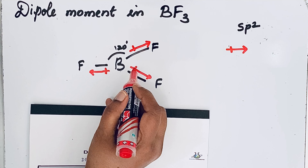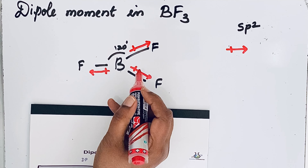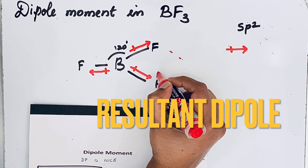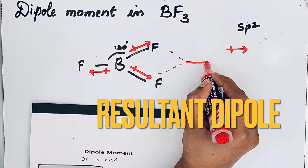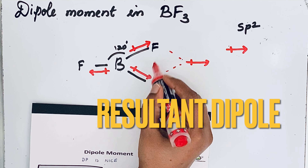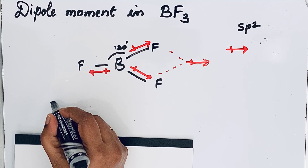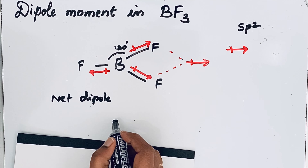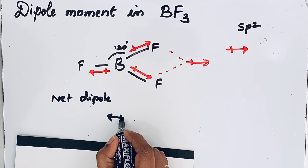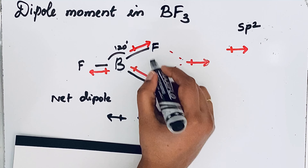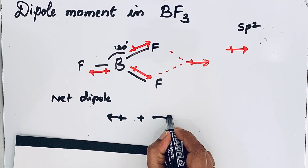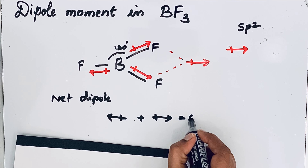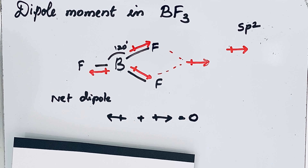These individual dipoles result in a net dipole. If we draw the vector sum, we get the net of these dipoles. For one B-F bond the dipole points one way, and for the other two B-F bonds the dipoles point in the opposite direction. Since they are in opposite directions and equal in magnitude, when we add them together we get zero. That is why the dipole moment in BF3 is zero.